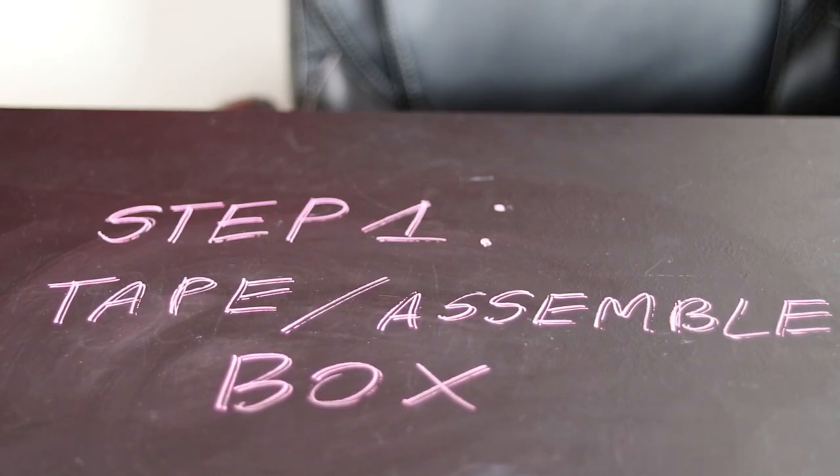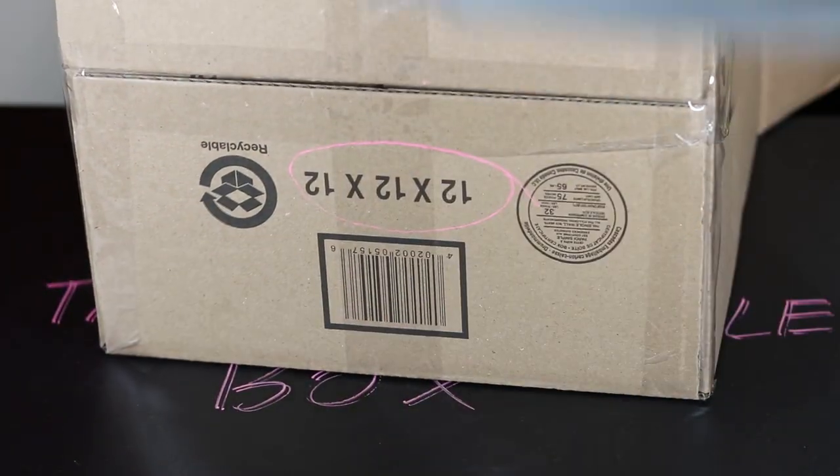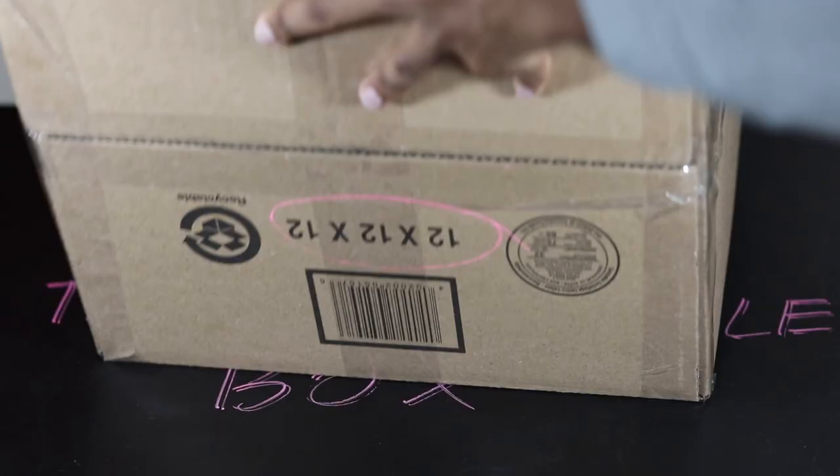Now we have all our supplies let's start with step one which is assembling the box. All you need to do is assemble one side of the box and leave the top open so we have it pretty much hollow from the top.